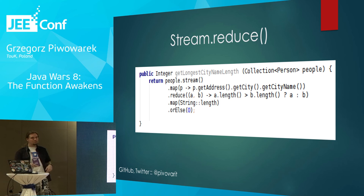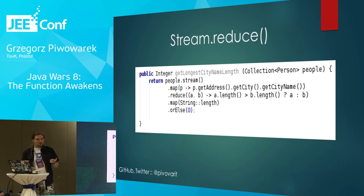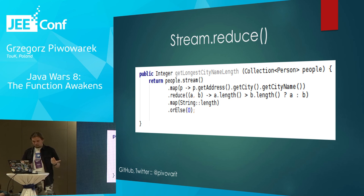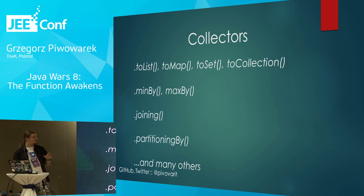Looking at an example of stream reduction: we take a stream of people, perform some map operations, then reduce by picking the biggest string. The Java API creators thought about us again — because if we're reducing the whole collection, we have no guarantee there is at least one element. So the reduce method returns an Optional for us. The second map operation comes from Optional, not from Stream. It really allows us to focus on what we want to do and not on how to avoid null pointers.